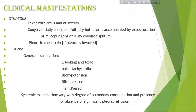Clinical manifestations. Symptoms: Fever with chills and/or sweating. Cough — initially short and painful dry, but later accompanied by expectoration of mucopurulent or rusty-colored sputum. Pleuritic chest pain if the pleura is involved.